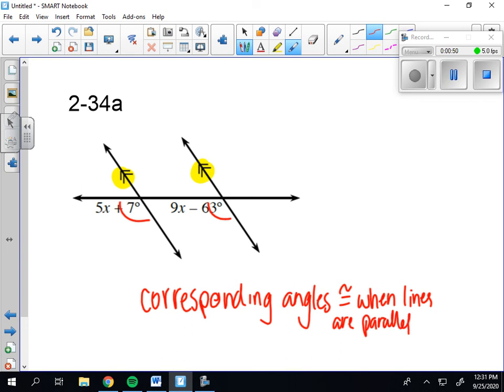So that means that the equation I can set up is 5x plus 7 has to equal 9x minus 63, and that's only because they're corresponding angles and the lines are parallel.